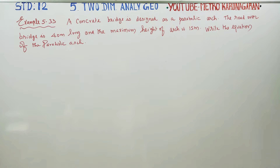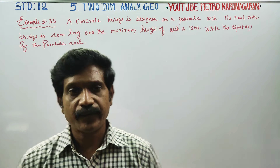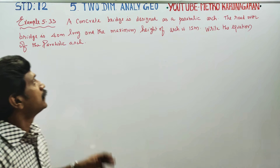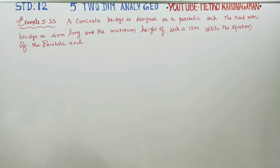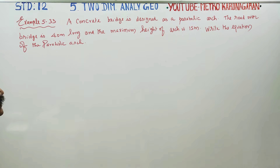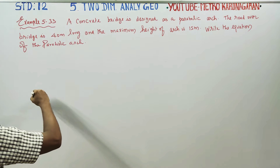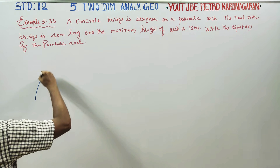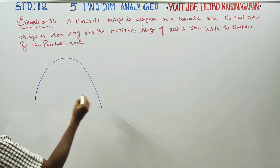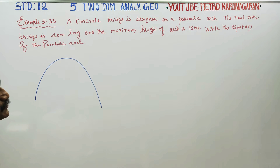Dear 12th standard students, I am Metro Karanagaran. In two-dimensional analytical geometry, example 5.33: a concrete bridge is designed as a parabolic arch. A road over the bridge is 40 meters long and the maximum height of the arch is 15 meters. Here is a parabolic arch.